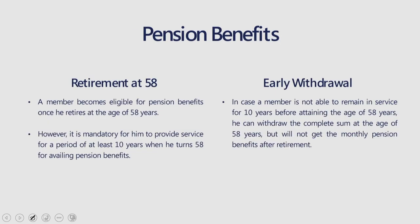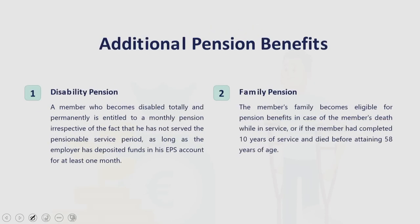There is a possibility of early withdrawal. In case a member is not able to remain in service for 10 years before attaining the age of 58, he or she can withdraw the complete sum at age 58, but will not get the monthly pension benefits after retirement. The member's family becomes eligible for pension benefits in case of the member's death while in service, or if the member had completed 10 years of service and died before attaining 58 years of age.